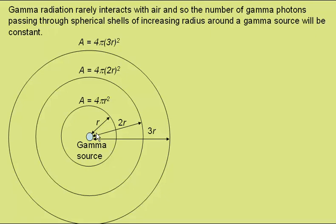The photons passing through this shell will also pass through this shell and this shell, so the intensity will drop off as the inverse of the square of the radius.